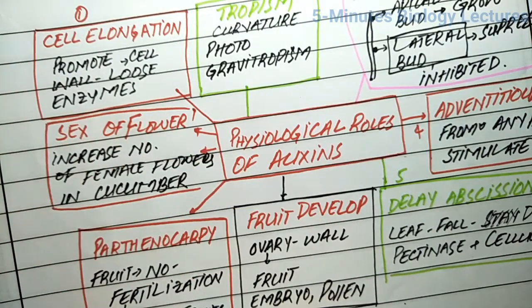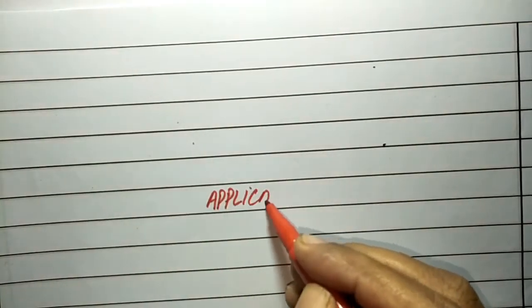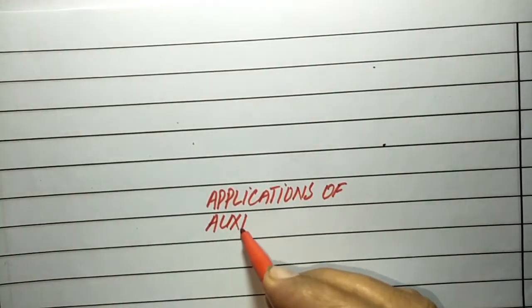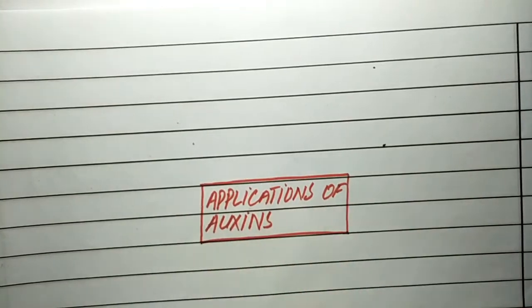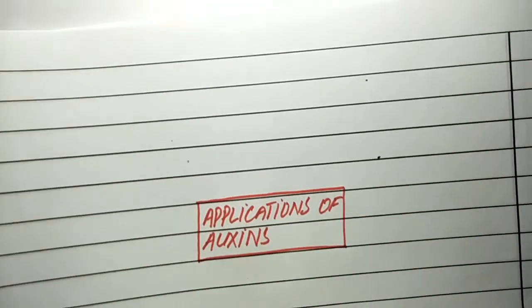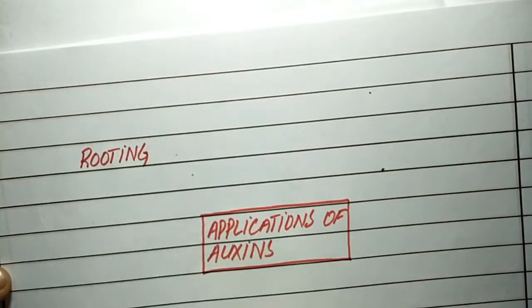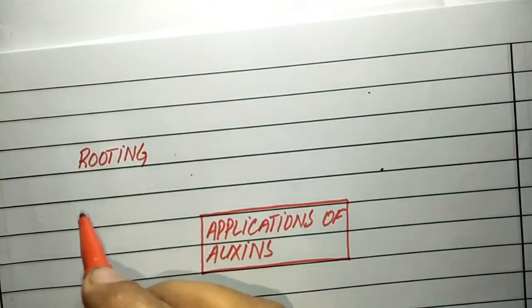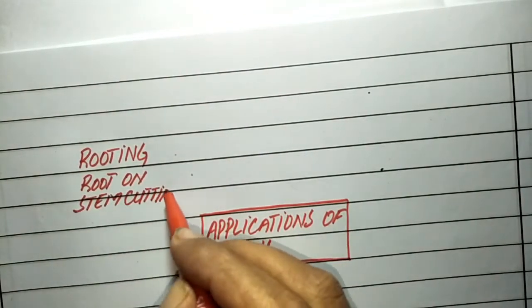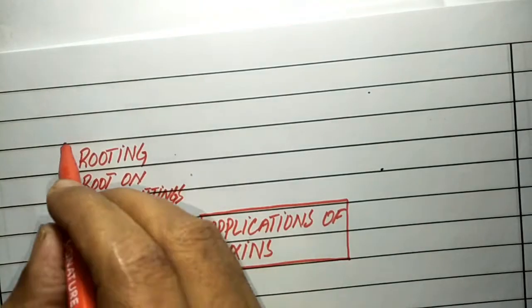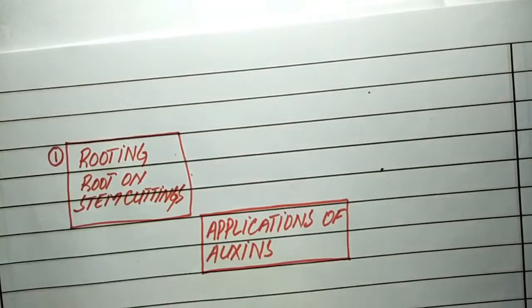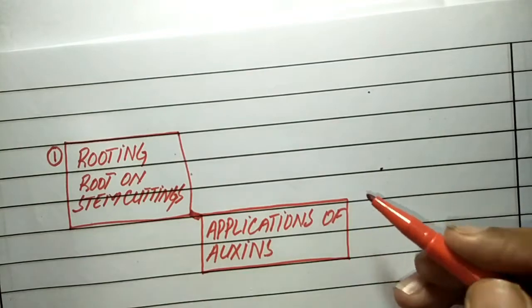These are some important functions performed by auxins. Now we will discuss applications of auxins. Auxins have been used commercially in agriculture and horticulture. They play important roles such as in the rooting of plants. Auxins stimulate root formation on stem cuttings, such as naphthalene acetic acid.